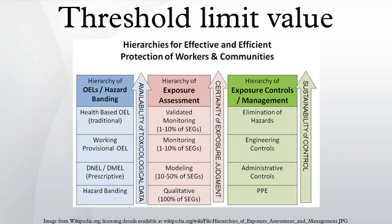TLVs, along with biological exposure indices, are published annually by the ACGIH. The TLV is an estimate based on the known toxicity in humans or animals of a given chemical substance, and the reliability and accuracy of the latest sampling and analytical methods. It is not a static definition since new research can often modify the risk assessment of substances and new laboratory or instrumental analysis methods can improve analytical detection limits.